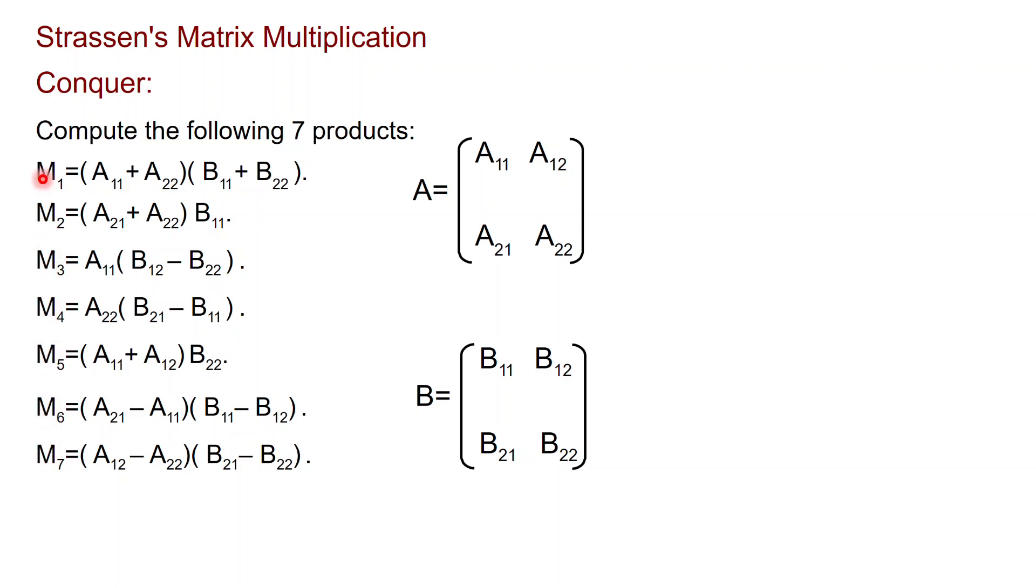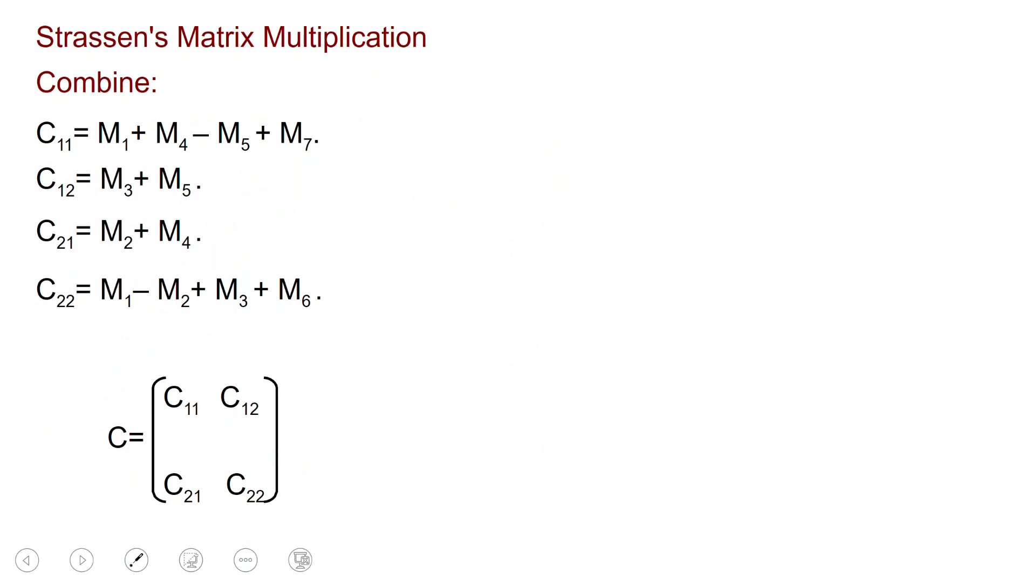But basically you follow the Karatsuba idea and you just compute seven matrix multiplications, where each of these multiplications is a multiplication between submatrices which is obtained just by summing or subtracting submatrices that we constructed earlier. And from these seven you can do a non-trivial combine step, just by summing and subtracting these seven matrices to obtain the four submatrices that you want.